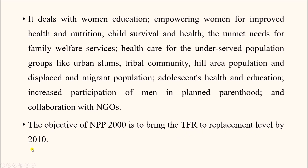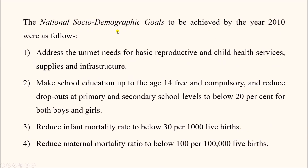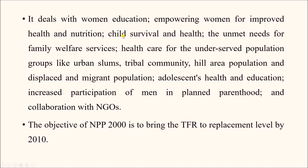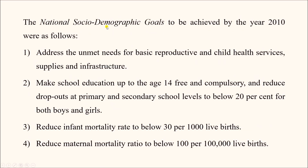The objective of NPP 2000 was to bring the Total Fertility Rate to replacement level by 2010. To achieve this, National Socio-Demographic Goals were formed, also to be achieved by 2010. The goals include: addressing unmet needs for basic reproductive and child health services, supplies, and infrastructure; and making school education up to age 14 years free and compulsory — ensuring all children receive free, compulsory education up to at least age 14.